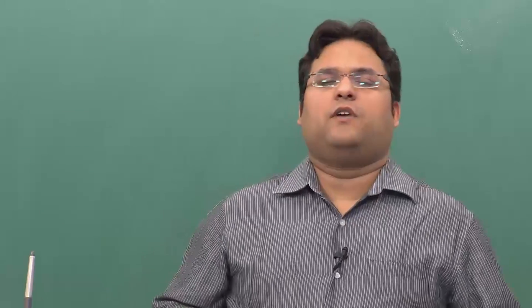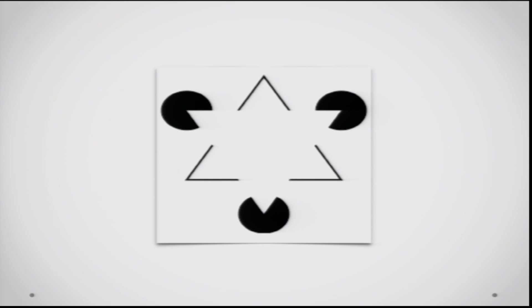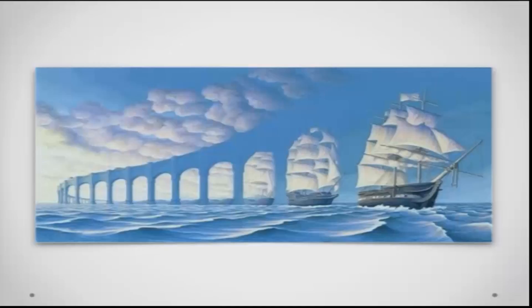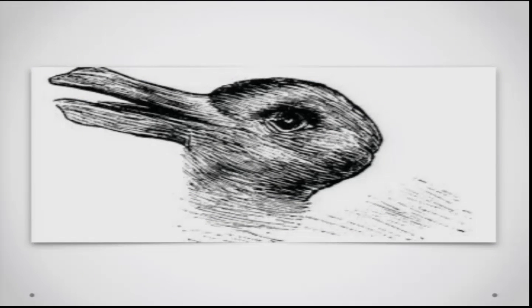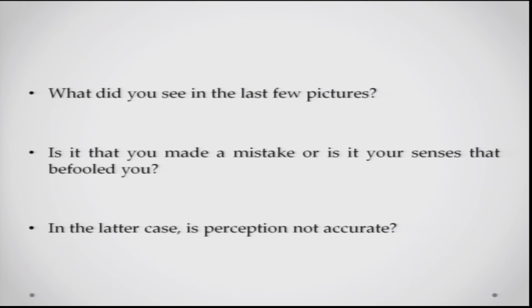Both of these lines are exactly equal in length. Do you also see a white triangle superimposed on a black-lined triangle here? The thing is that there is no white triangle in this figure — it is just we who are actually seeing that. Do you see a bridge or a fleet of ships here? I see a bridge, but if I focus I see a fleet of ships as well. What is this — is it a rabbit or a bird? If you notice these pictures, you probably saw something which was probably not there in the pictures.